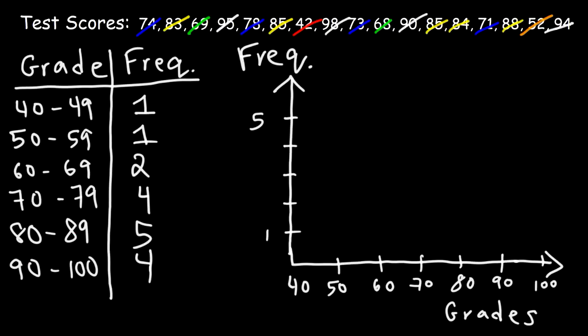So let's plot the first one. Let's create a bar that goes up to 1. So between 40 and 50, the frequency is only 1. Now, between 50 and 59, the frequency is still 1. And between 60 and 69, it goes up to 2. So this one's going to be a little bit taller.